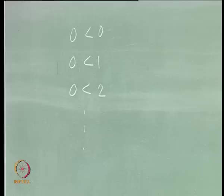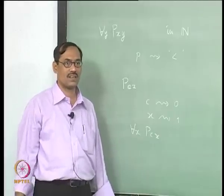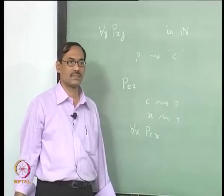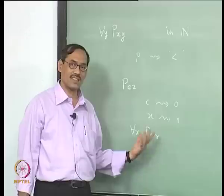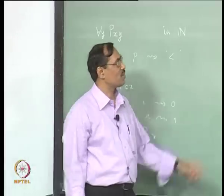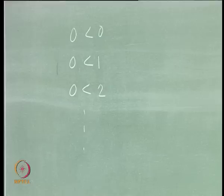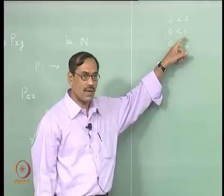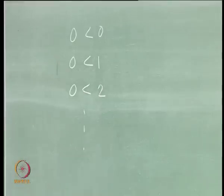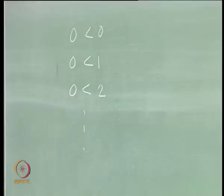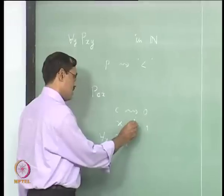If all of them are true, this sentence will be true; otherwise not. If x has already been associated with 1, how to bring in '0 less than 2'? What we do is: '0 less than 1' we are able to get, because x has become associated with 1. Now, when you come to 'for each x, P(c, x)', somehow you have to free that association x to 1 and consider again association x to 0 or x to 2 and so on. Suppose you say this association is l.